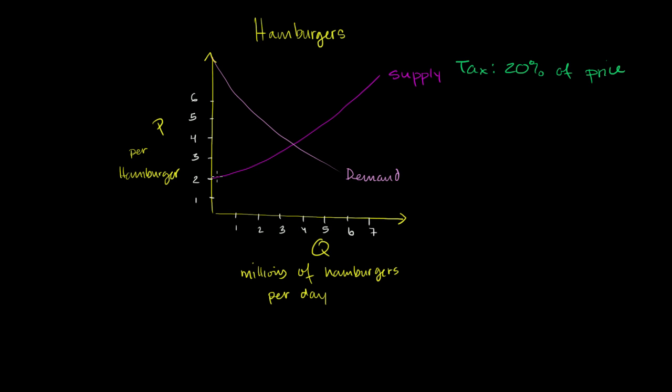And every incremental hamburger after that, the opportunity cost goes more because now they'll be using things that are slightly less suited for making hamburgers and maybe slightly more suited for making other things. Now, that very first hamburger, you need to get $2 for it from the supplier point of view.